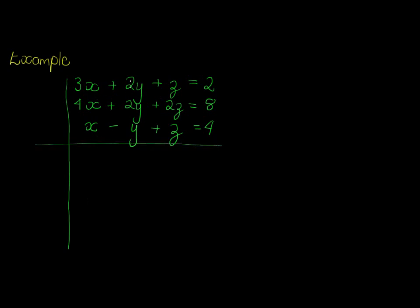The easiest way to do so is to find coefficients that are the same for a certain variable. We see x, there's no coefficients that's the same, but here we see we have 2y, 2y. That means if I'm going to take equation 1 and subtract from equation 1, equation 2,